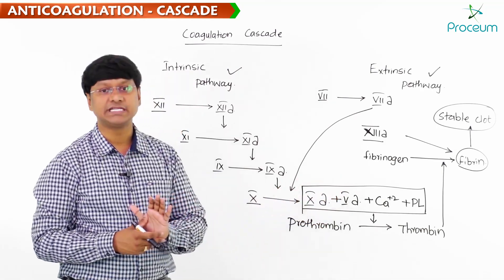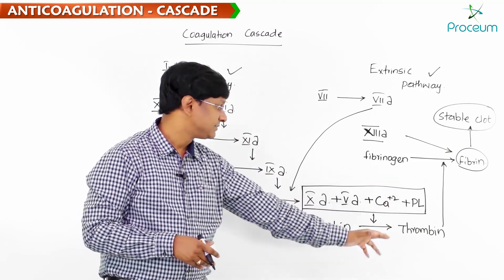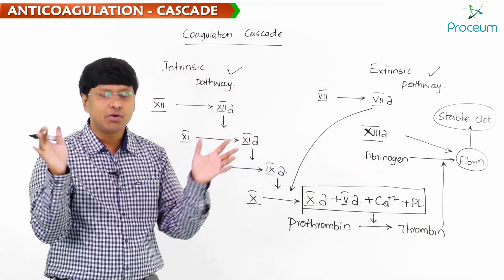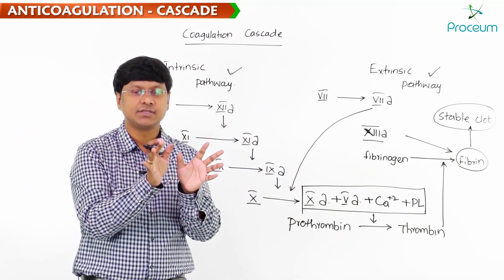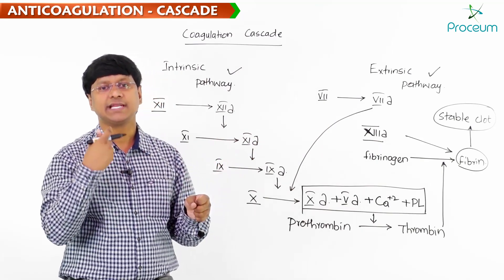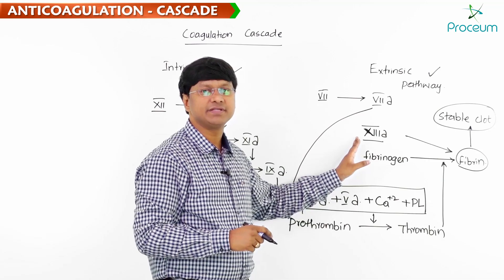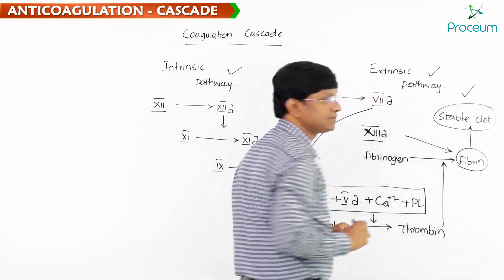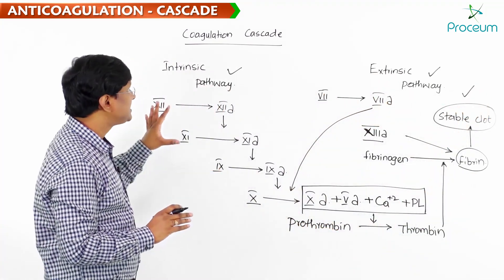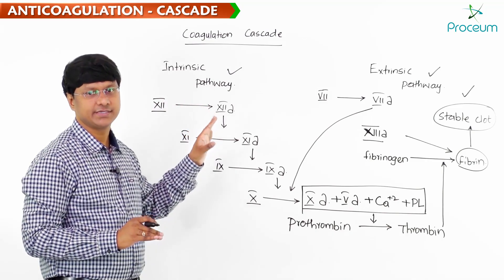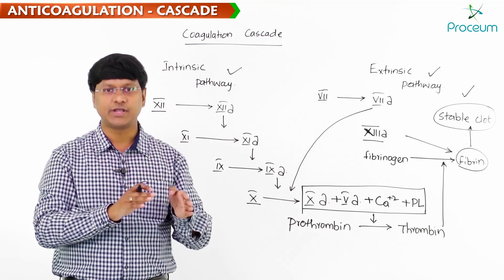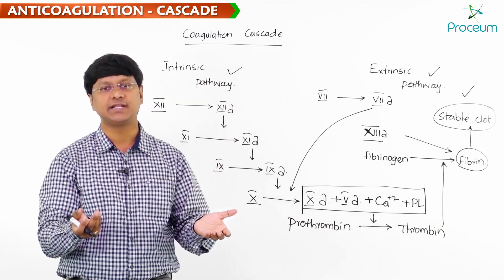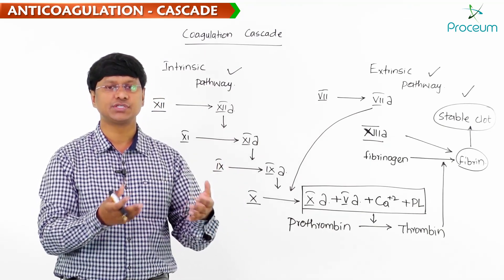This prothrombin converter produces thrombin, which acts on fibrinogen to produce fibrin threads. Multiple fibrin threads accumulate in a clot, and the clot is stabilized by the fibrin stabilizing factor — factor 13A — thereby producing a stable clot. This is the coagulation cascade. With this basic understanding, we can now discuss the individual anticoagulants and understand their mechanisms of action thoroughly.